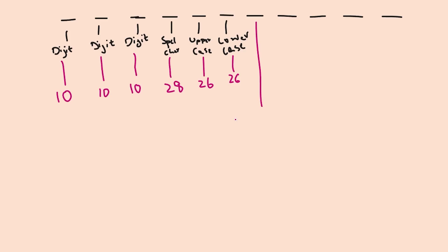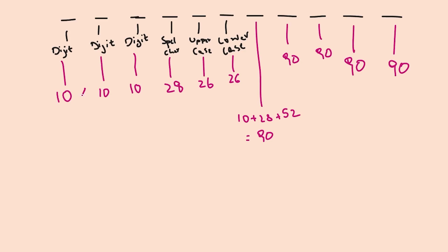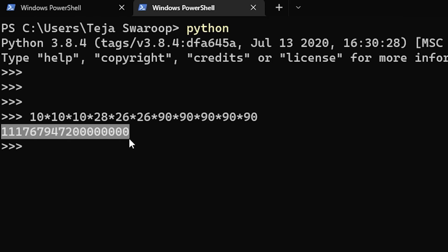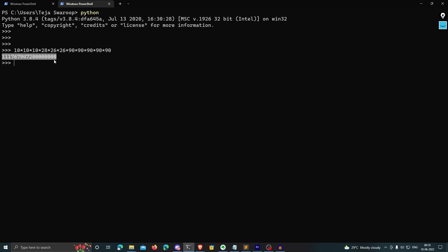For the remaining five spots, there are 10 plus 52 plus 28, which equals 90 possibilities each. If I multiply the possibilities for every spot together, it gives the total number of possible passwords based on the information we have.